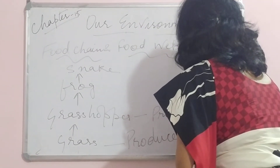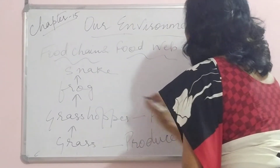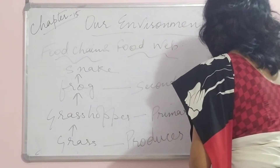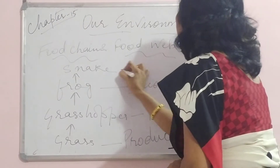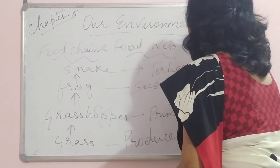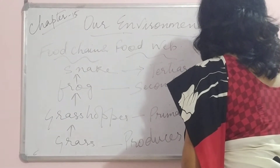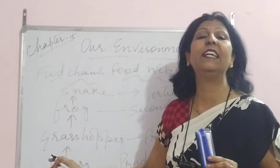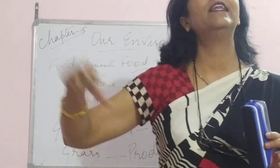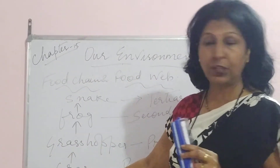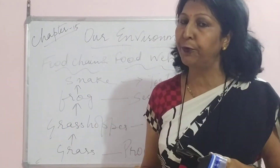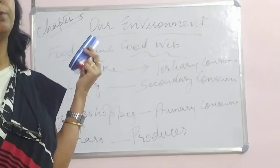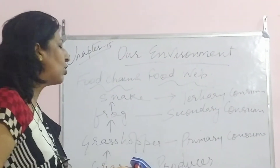So in this chain: grass is the producer, grasshopper is the primary consumer, frog is the secondary consumer, and snake is the tertiary consumer. Now, a chain does not mean grass is only eaten by grasshopper — grass can be eaten by many other organisms. But in a food chain, we talk about only one organism at each level. We are not talking about decomposers here, as they are always microorganisms.